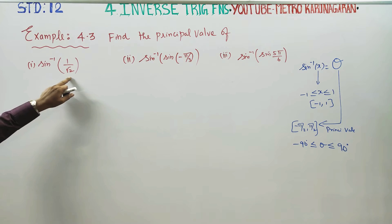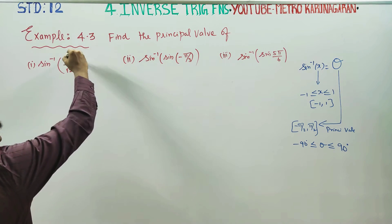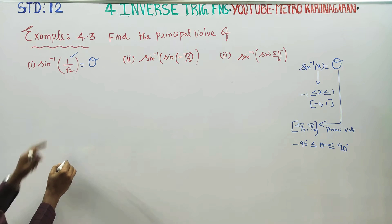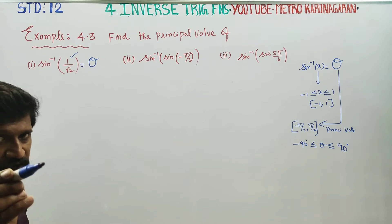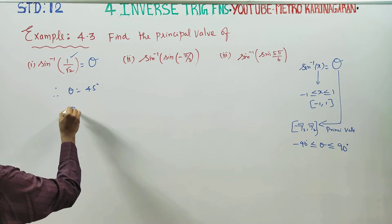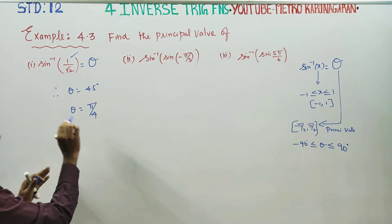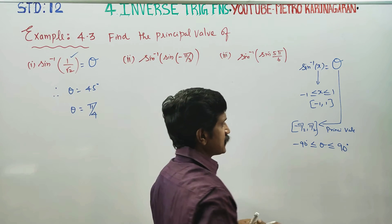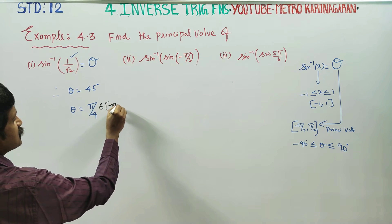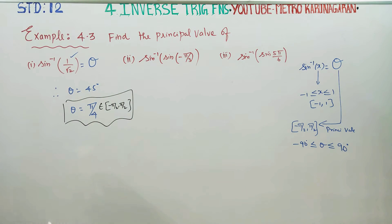First, we have 1 by root 2. 1 by root 2 is allowed — it falls within the domain. The answer is 45 degrees. Therefore, theta is equal to 45 degrees. In radian measure, 45 degrees can be written as π/4. This belongs to minus 90 to plus 90, so this is your final result — it is the principal value.